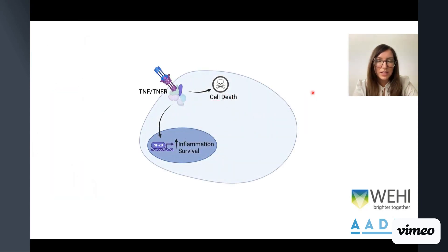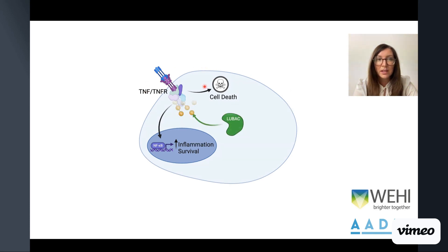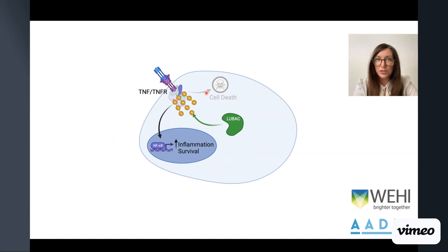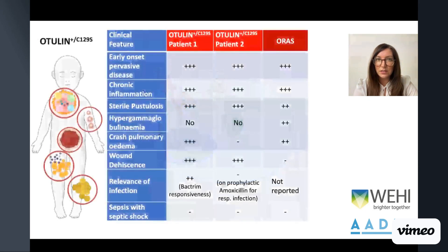Linear ubiquitin chains are important for many different processes in the cell, including the stabilization of the TNF receptor signaling complex. The E3-ligase complex LUBAC ubiquitinates the TNF receptor signaling complex upon TNF engagement with its receptor to promote NF-κB-driven signaling and inhibit TNF-induced cell death.